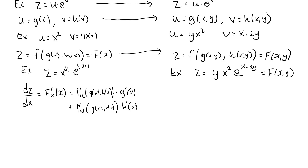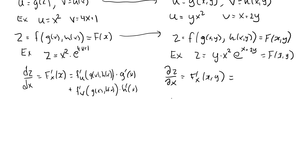Moving on to the second scenario, where we have a function of two variables and each variable depends on two variables, the chain rule will look like this. The composite function is now a function of two variables, so we get two partial derivatives. For partial z over partial x, this equals the partial derivative of f with respect to u, evaluated at g(x,y) and h(x,y), multiplied by the partial derivative of g with respect to x, evaluated at (x,y).